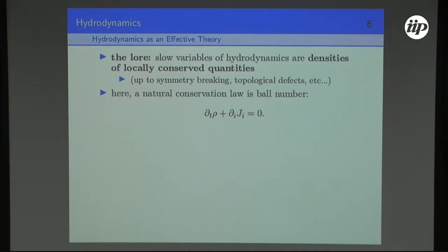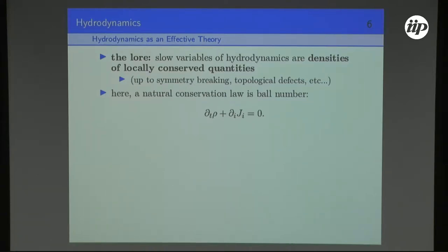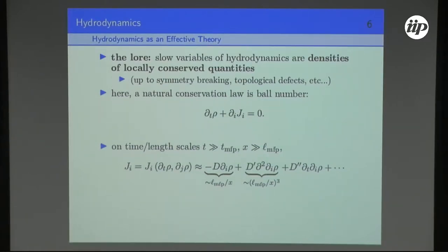In the billiard ball example, the natural conservation law is the density of billiard balls. It's natural to guess that the equation of motion of this hydrodynamic theory would be the one thing we know for sure: we have a local conservation law, associated with an exact Ward identity. Even in quantum mechanics, this is an exact equation as an operator statement. We want to go from this empty operator statement into something we can actually predict with, so we rewrite the current in terms of our hydrodynamic degrees of freedom.